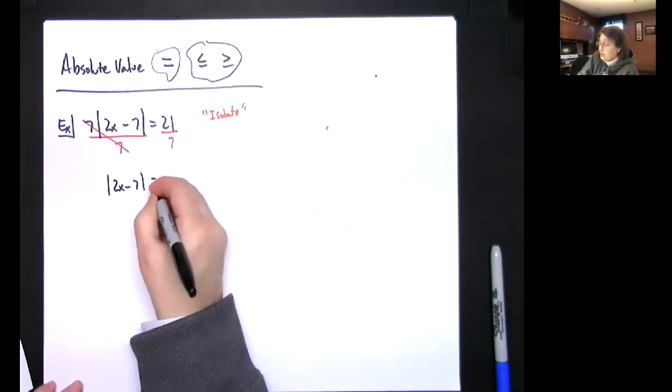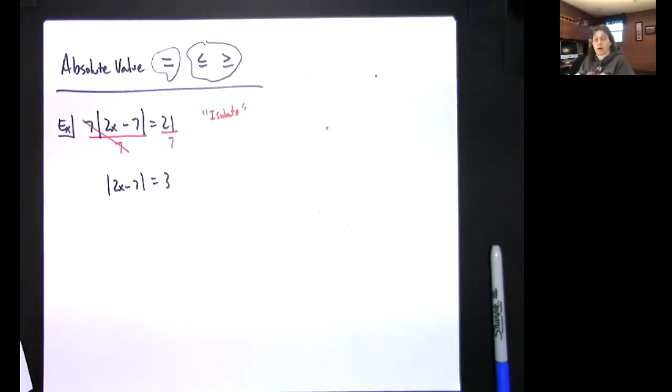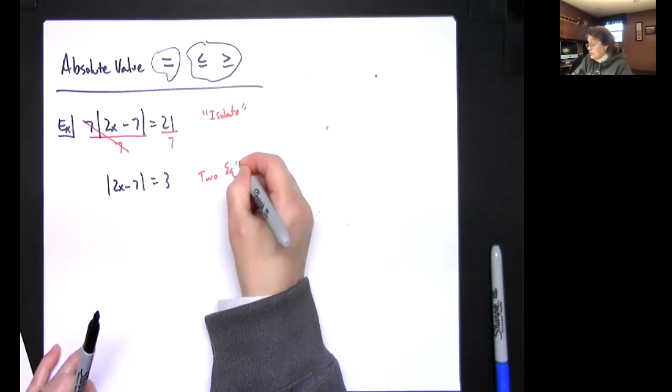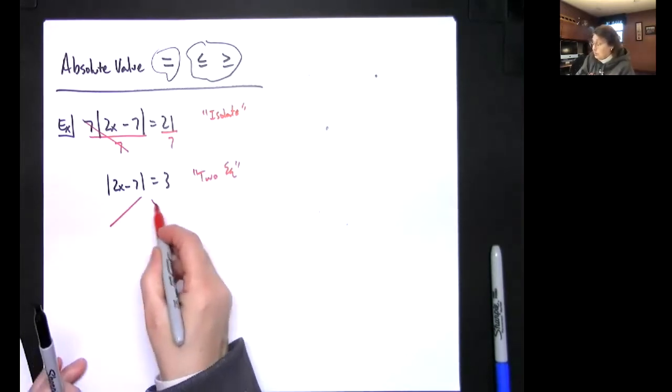Now after you do that, absolute value of 2x minus 7 is equal to 3. And then you've got to always remember two answers, two equations. Split this up.